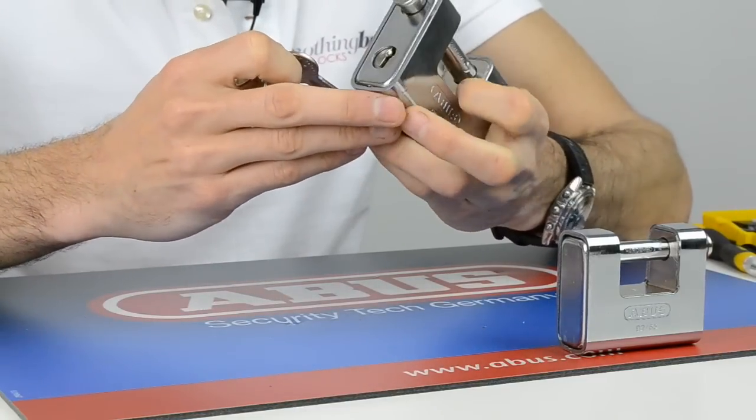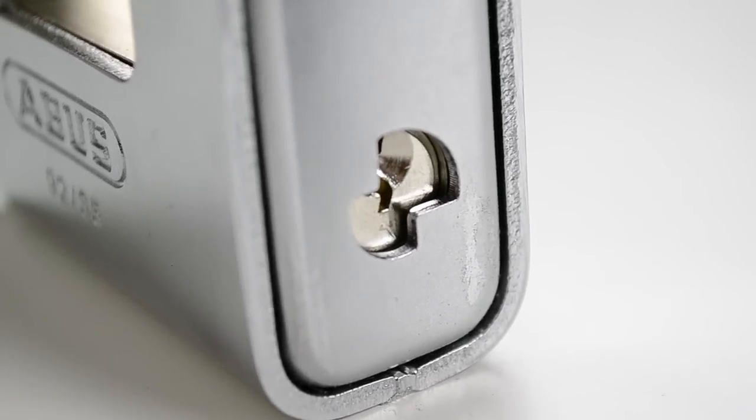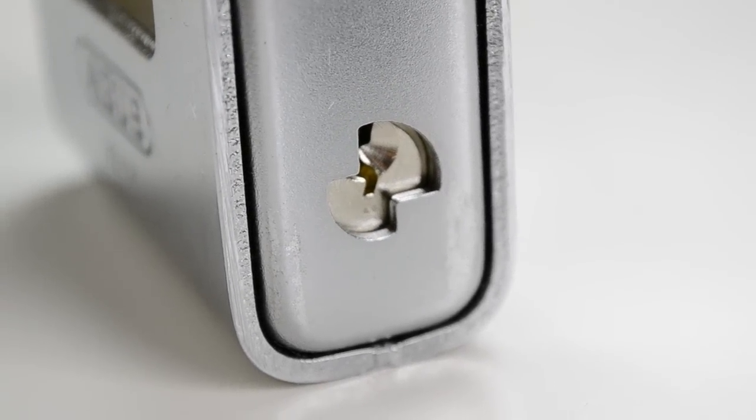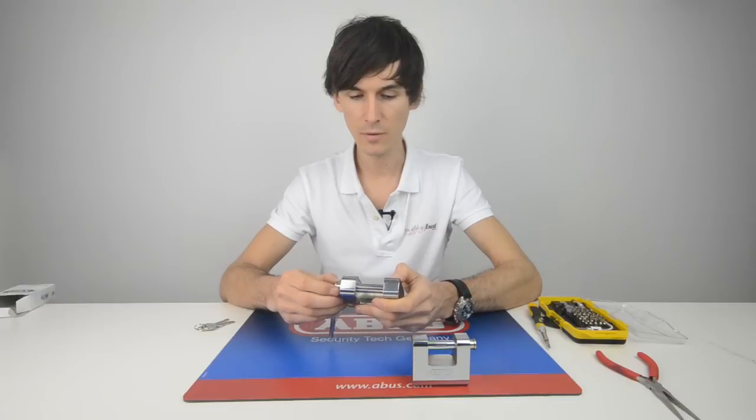The keyway is protected also by a hardened steel plate, and the mechanism is the usual six-pin anti-pick mechanism by ABUS.